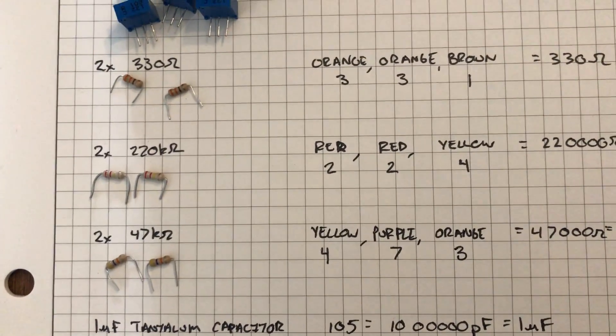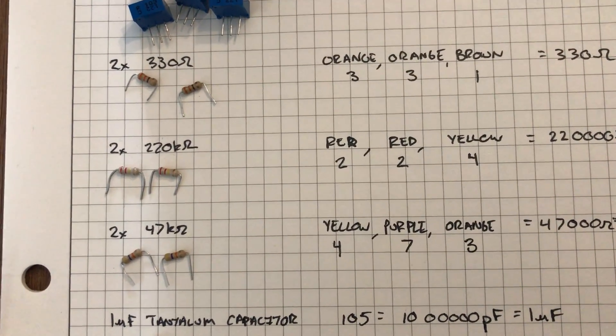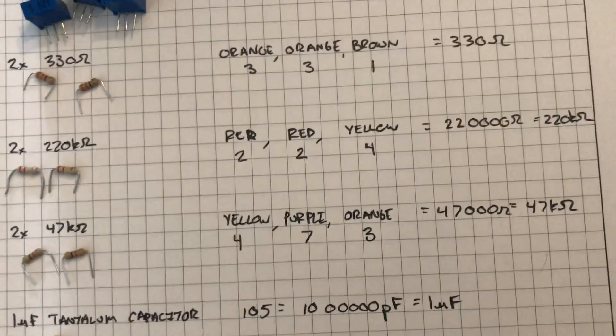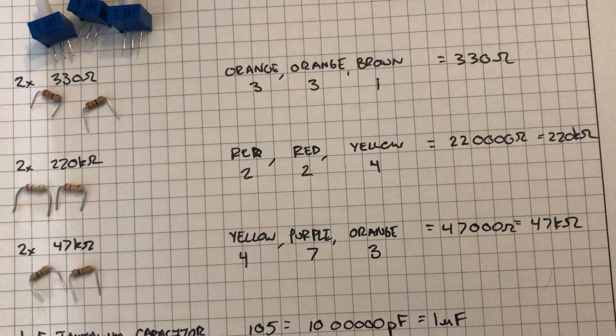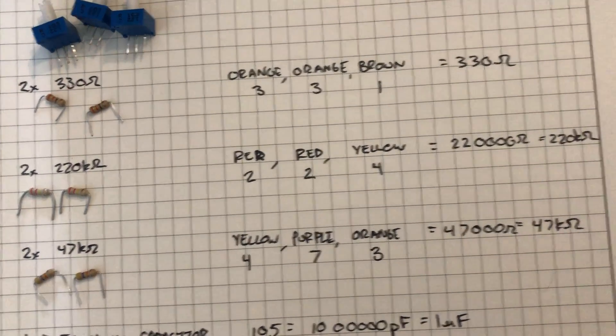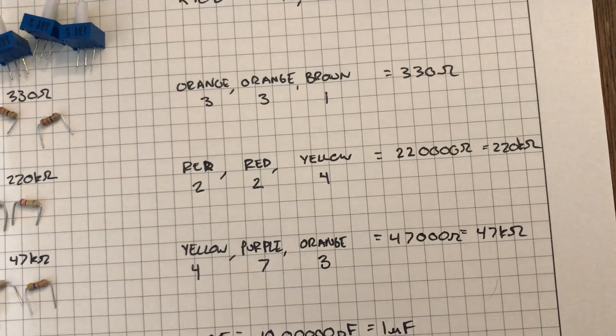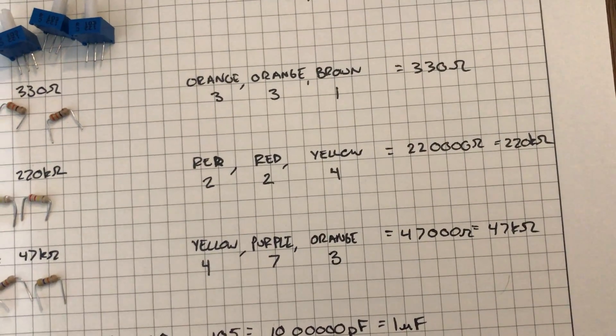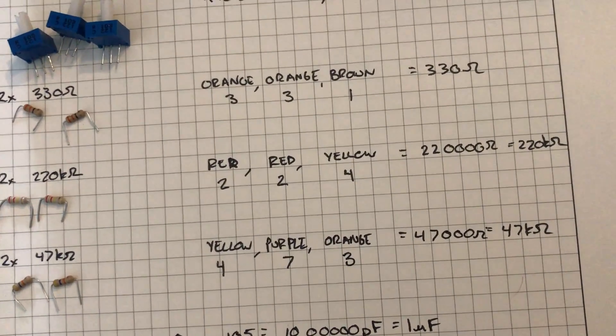The next component I have are two 220 kilohm resistors. The color code for those is 224, which comes from red red yellow, and what that means is 22 with four zeros behind it, which comes out to 220 kilohms.